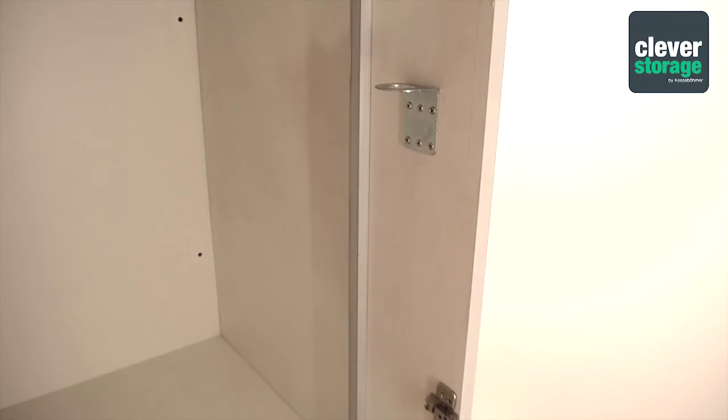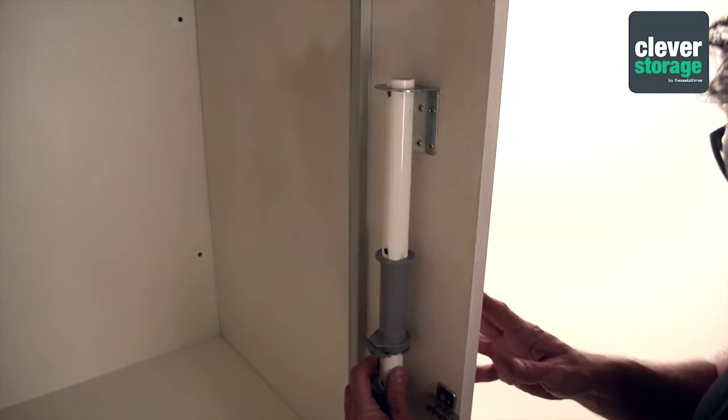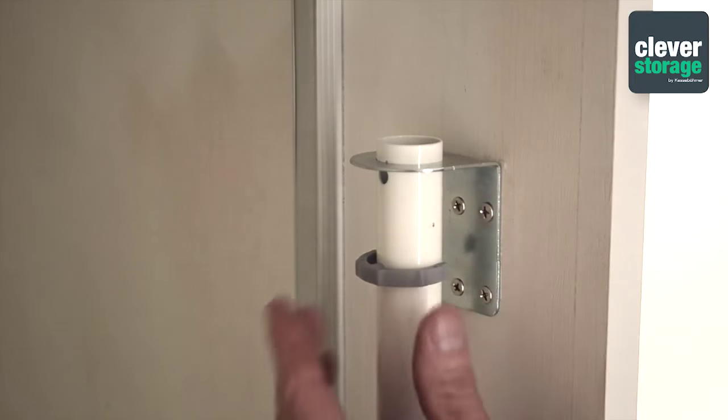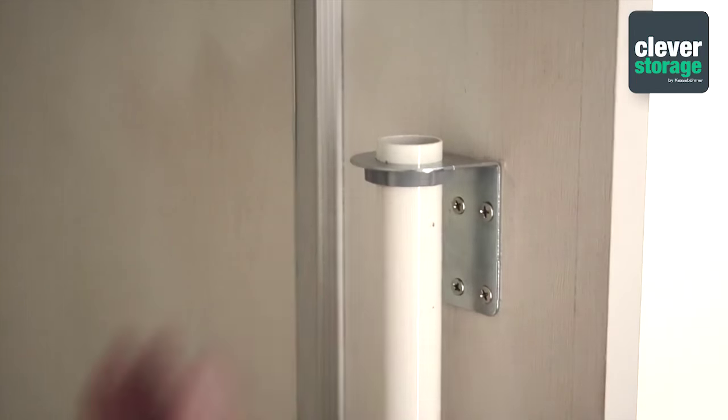Now, to install the post into the blind side of the cabinet, slide the post up first into the top coupling and set it down onto the bottom coupling. Then, use the snap ring on top of the post to hold it in place.